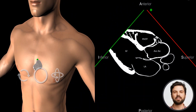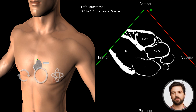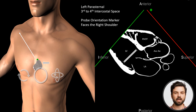The first view that we will look at is the parasternal long axis view. To obtain this view, we first place the patient in the left lateral decubitus position with the left arm under the head. Identify the third or fourth intercostal space just to the left of the patient's sternum. The probe is placed in this position with the marker facing the patient's right shoulder. Make small adjustments to the probe position until the two opposite left ventricular walls appear at their widest distance.